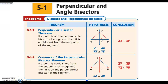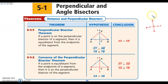Today we are starting chapter 5, section 1, which is perpendicular and angle bisectors. We are going to start with perpendicular bisectors. A reminder that if I have a segment, and at the midpoint, if I draw a line that is perpendicular through that point, that is a perpendicular bisector. This line right here is a perpendicular bisector — it is perpendicular to the segment, and it bisects it as well.